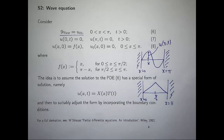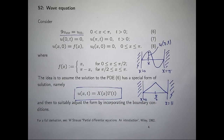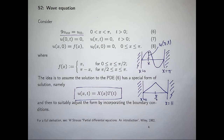We've already looked at the heat equation with separation of variables, and the idea with the solution to this problem is very similar. The key assumption is to assume that solutions have some special form — in particular, the product of two functions: one that only depends on position x, and the other only depends on time t. Then we introduce the boundary conditions and initial conditions gradually, and suitably adjust the form of our solution.